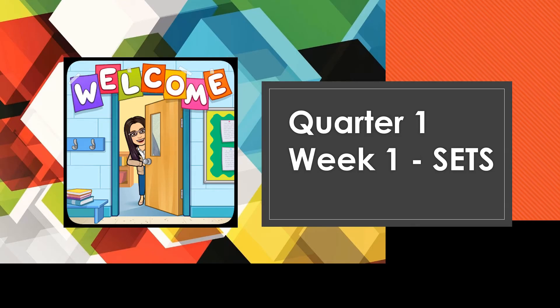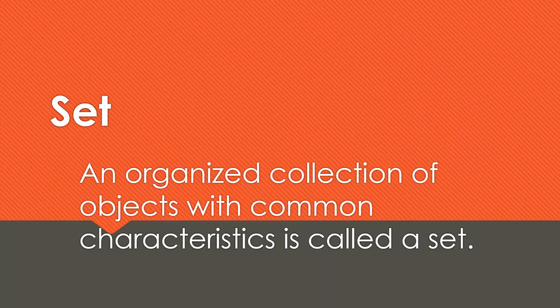Good day everyone. For quarter one, week one, we have sets. A set is an organized collection of objects with common characteristics — meaning the same shared characteristics. Example: a set of school supplies, things that are used in school.